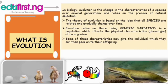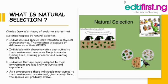Some of these characteristics may give the individual an advantage which they can pass on to their offspring. According to Charles Darwin's theory of evolution, evolution happens by natural selection. The natural selection principles are as follows: individuals in a species show variation in physical characteristics, and this variation is because of differences in their genes.